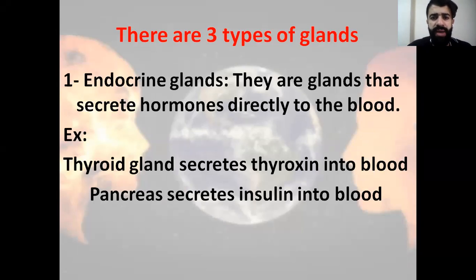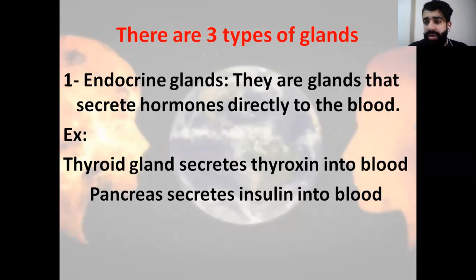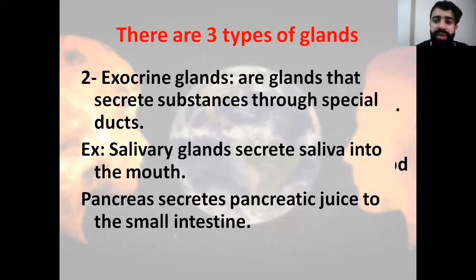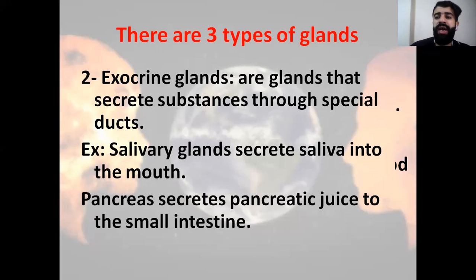We have three different types of glands. First, the endocrine gland — glands that secrete hormones directly into the blood. That's why they are called 'endo' — directly into the blood. For example, the thyroid gland secretes thyroxine into the blood, and the pancreas secretes insulin, which is a hormone, into the blood. The second type is called the exocrine gland — glands that secrete substances through special ducts. For example, the pancreas secretes pancreatic juice into the small intestine, and the salivary glands secrete saliva in the mouth.